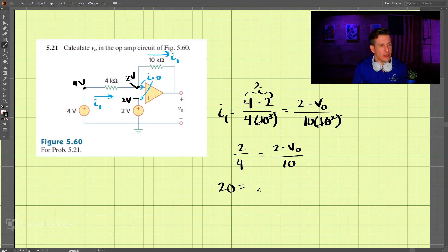We have 12 equals negative 4 v naught, so this v out here, this value, then comes out to be negative 3 volts.